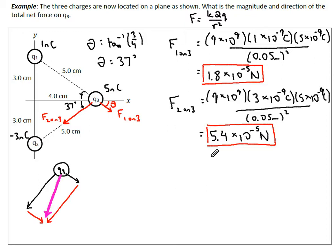What that means is we need to find out what is the sum of the forces in the x direction and the sum of the forces in the y direction. F1 on 3 has an x and y component and F2 on 3 has an x and y component.